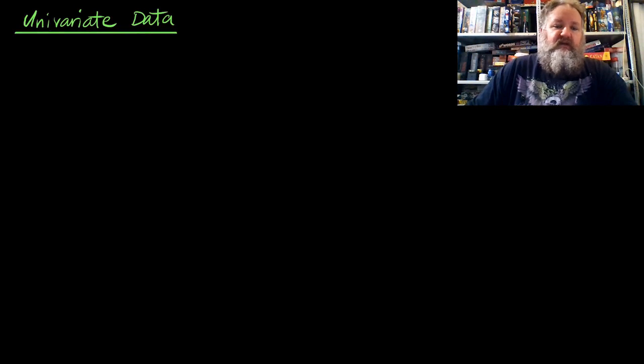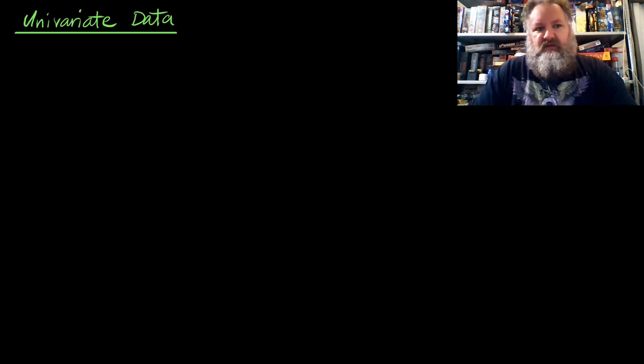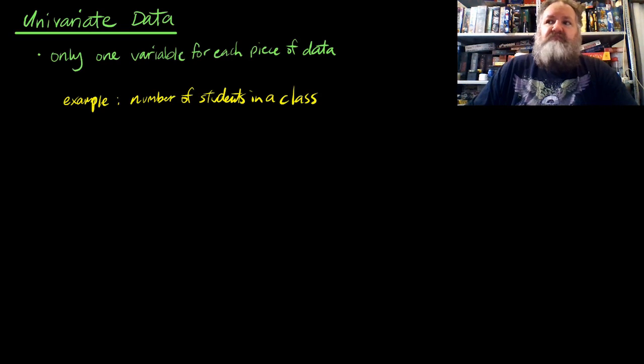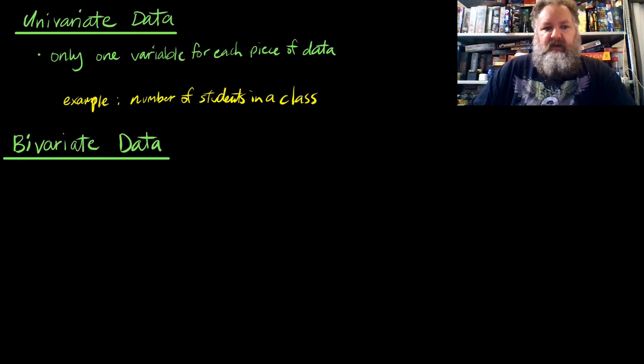So far we've been talking about data in terms of only one variable - univariate data. We were looking at mean, median, and mode, finding measures of center and spread, but really it's all been for one variable, one thing at a time. That's what univariate data is: one variable. Now we're about to start talking about bivariate data.